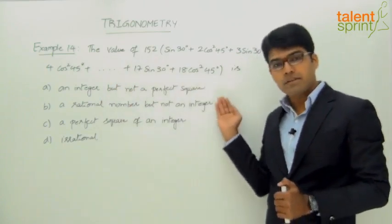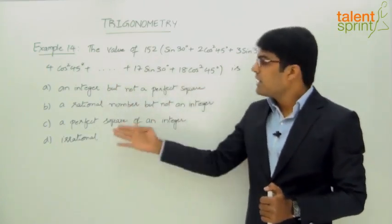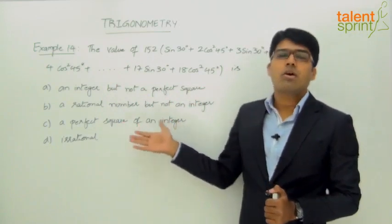Is it an integer but not a perfect square, a rational number but not an integer, a perfect square of an integer, or irrational?